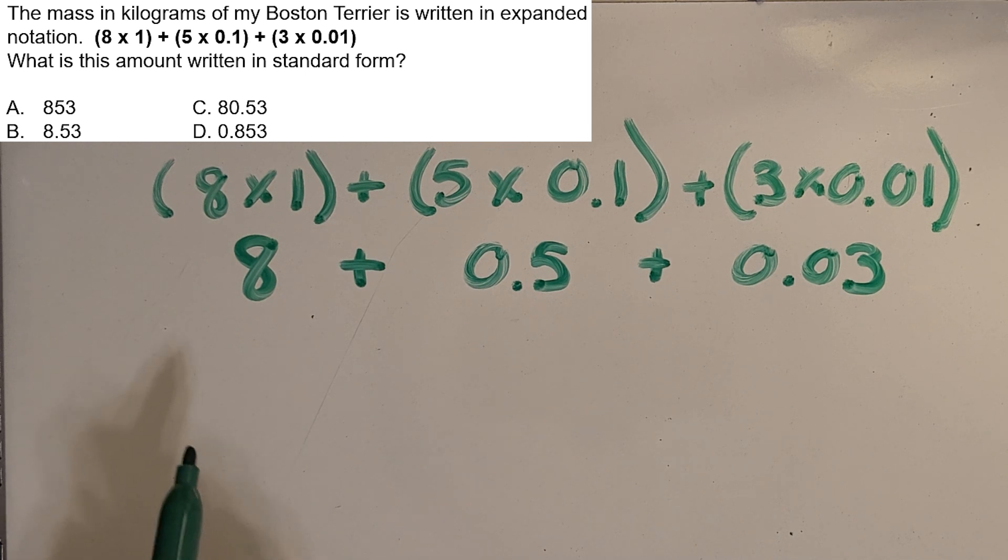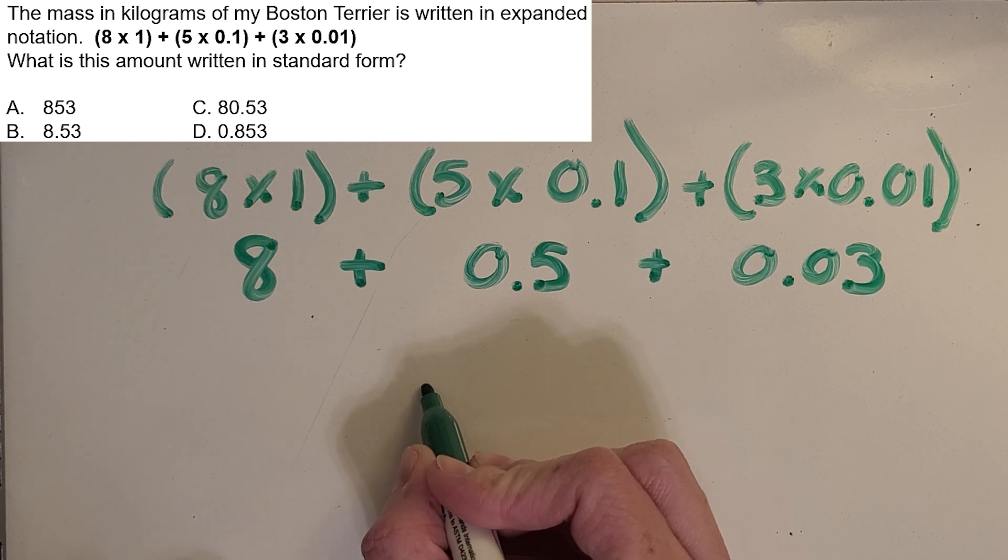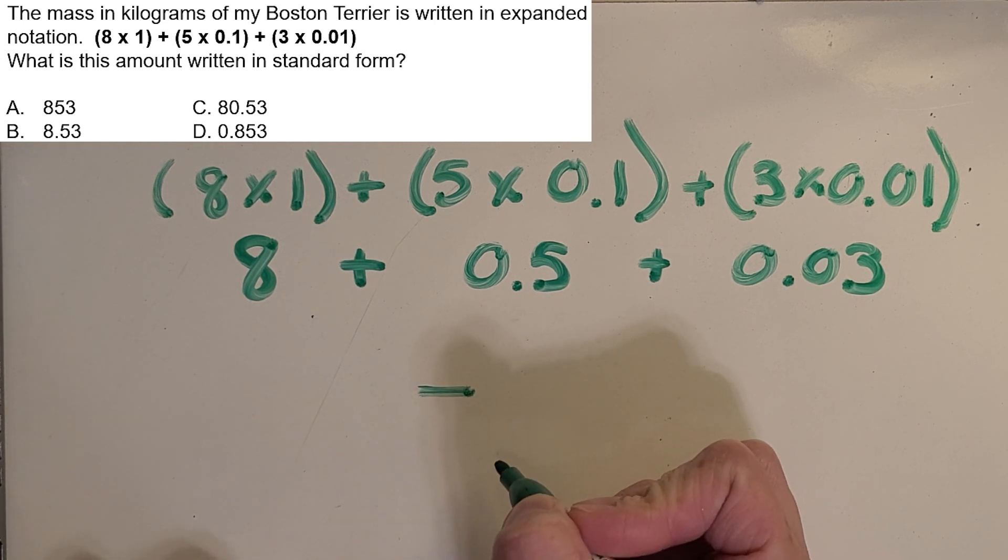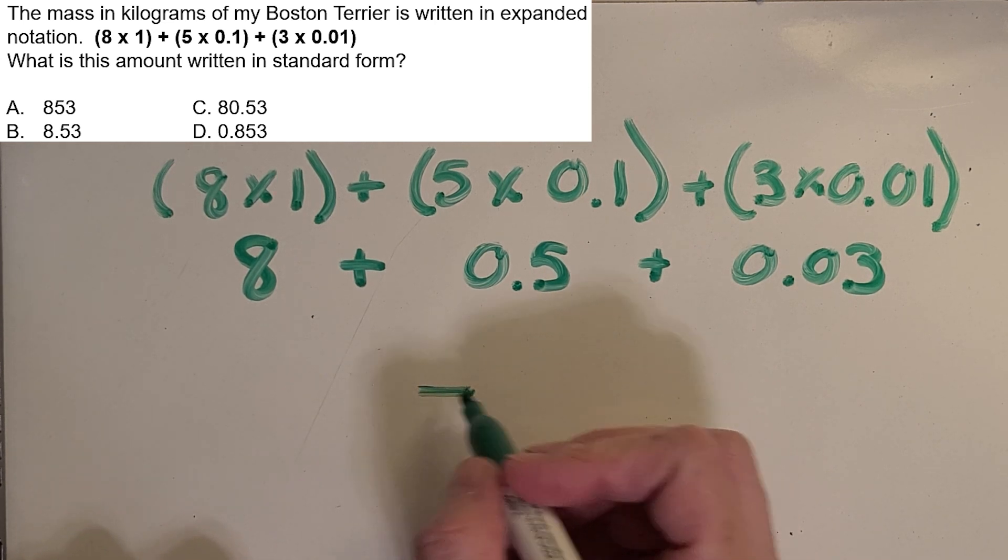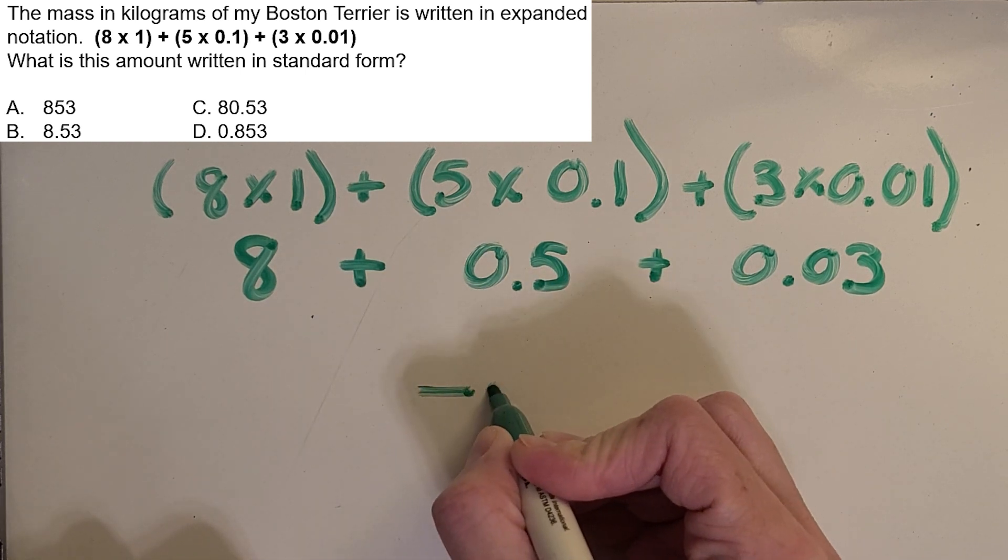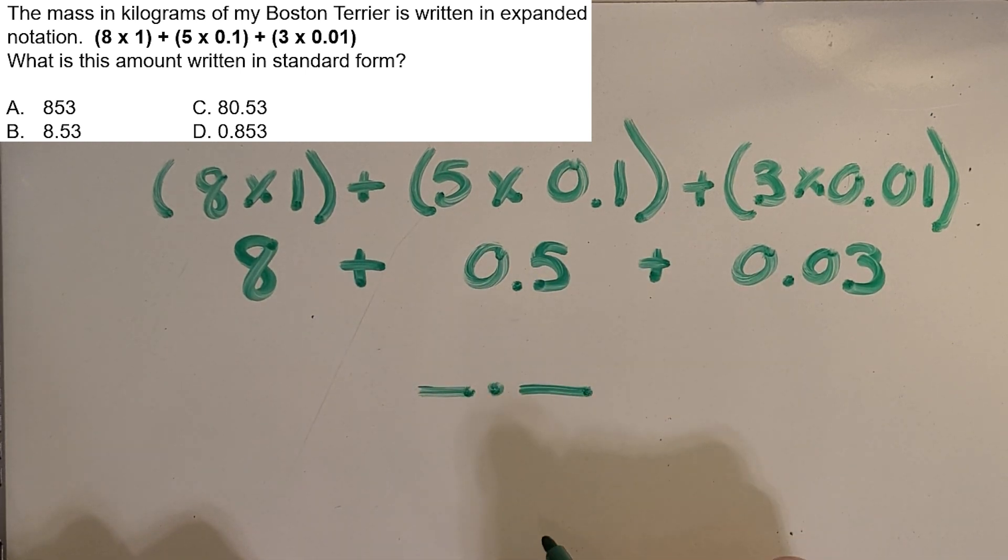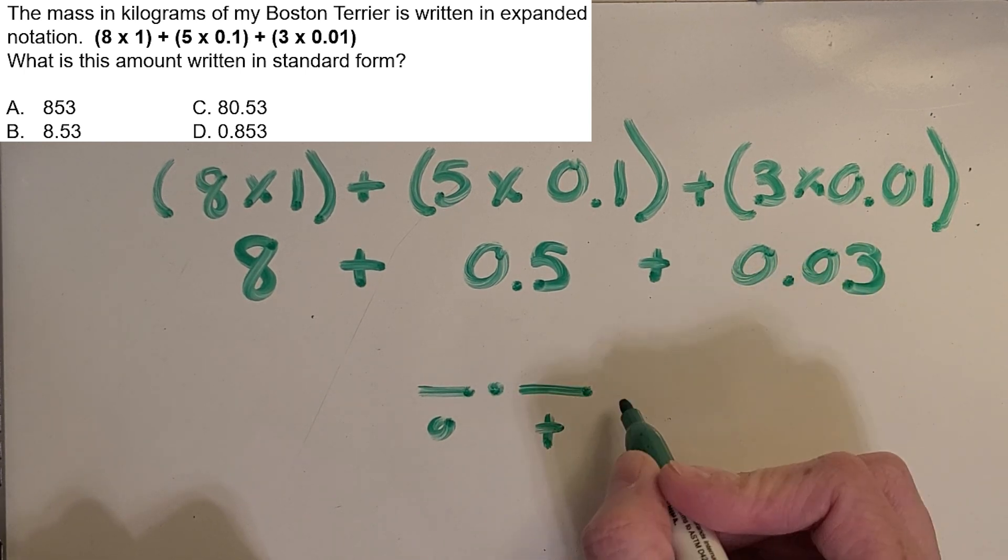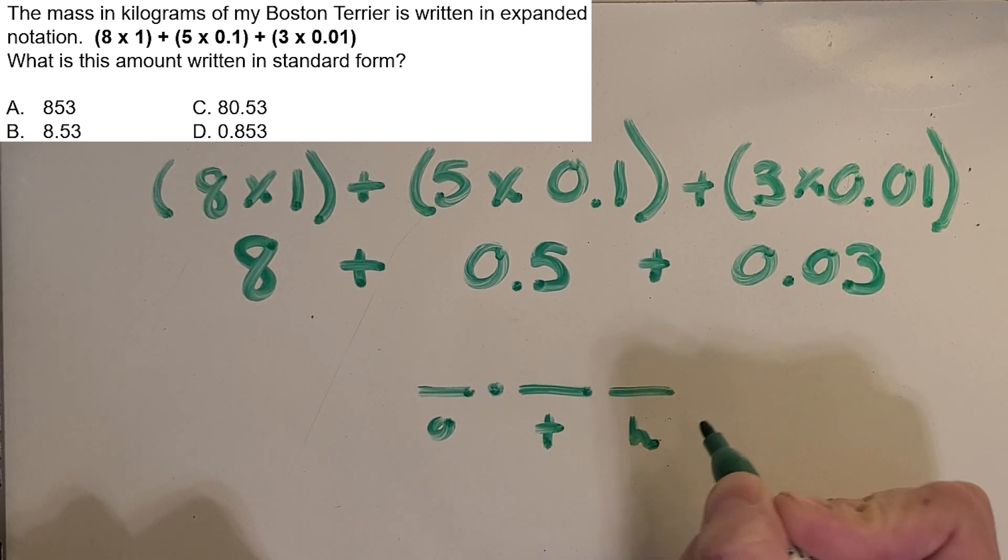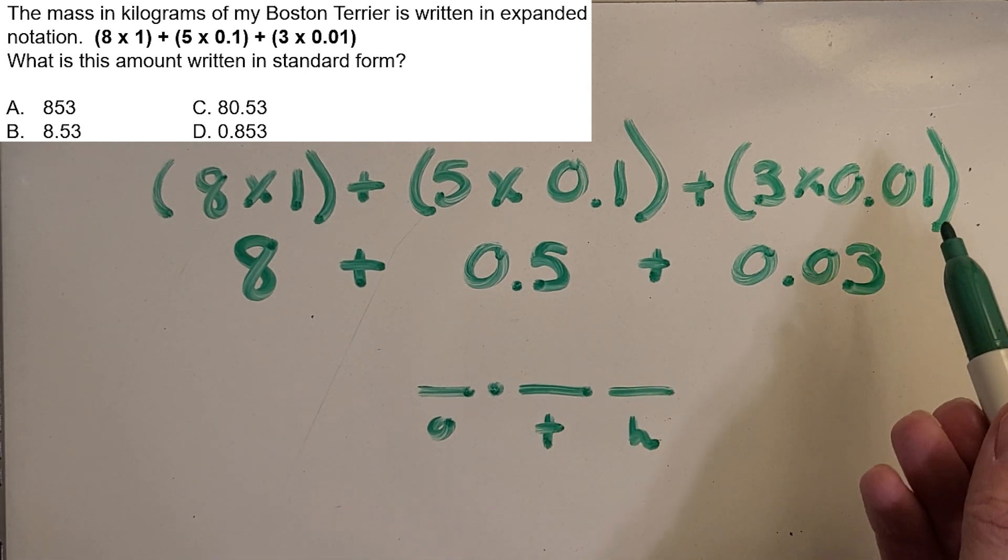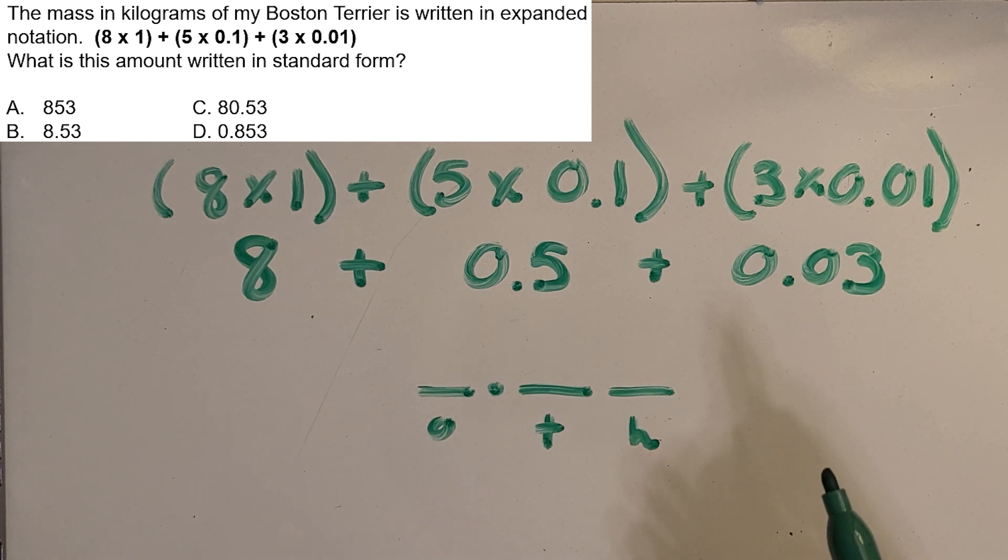All right, now if we're putting this all together, one thing I like to do next is I like to make myself some little blanks so that I know, okay, there should be a ones place, there should be a tenths place, I could even label down below, and there should be a hundredths place. And I don't need a thousandths place because it doesn't mention thousandths in my expanded notation, so I don't need that one. Okay, then we can start filling it in.